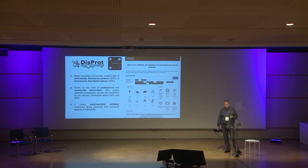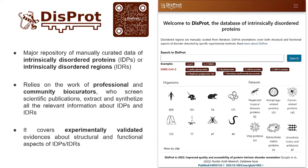One of the peculiarities of DisProt is that it relies both on the work of professional curators and largely on community biocurators who screen scientific publications and extract and synthesize all relevant information about IDPs and IDRs. It covers experimentally validated evidence about structural and functional aspects of IDPs and IDRs, with a strong emphasis on experimental validation.